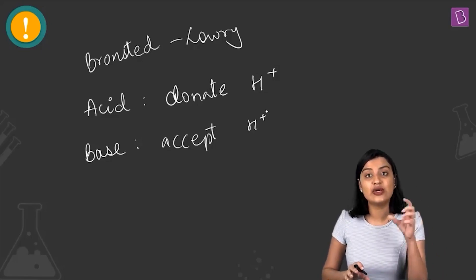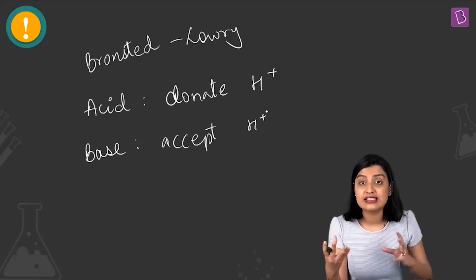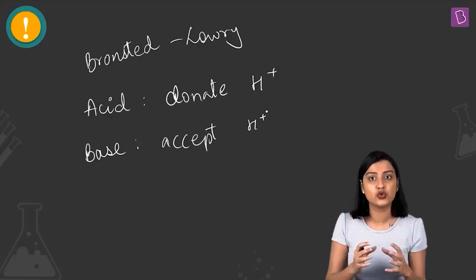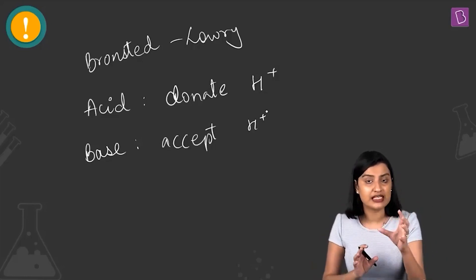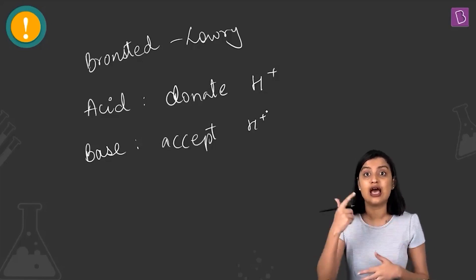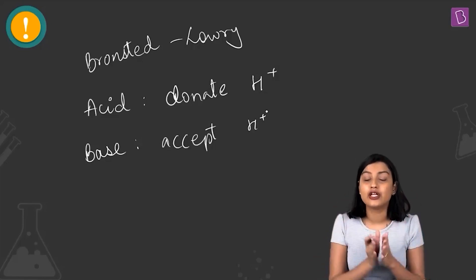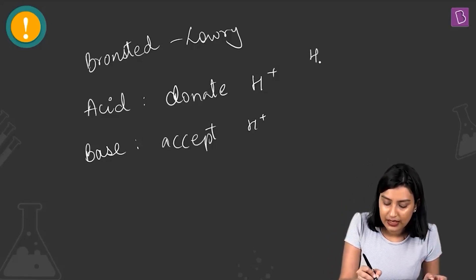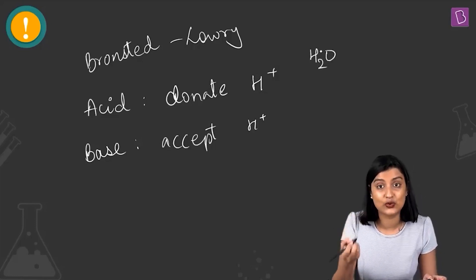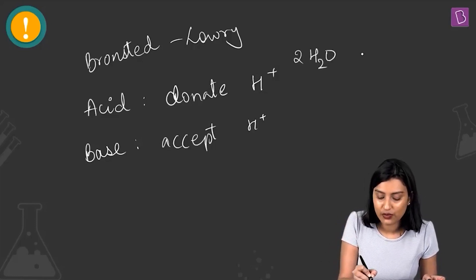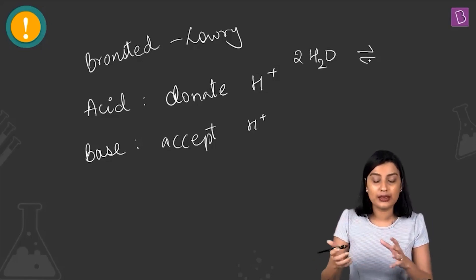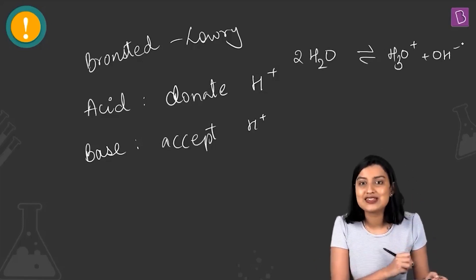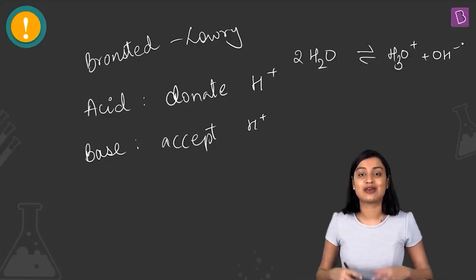The question asks which species can act as both Bronsted acid and Bronsted base — meaning the molecule must have the capacity to both accept and donate a proton. A classic example is water: 2 H2O ⇌ H3O⁺ + OH⁻.